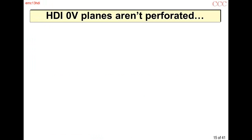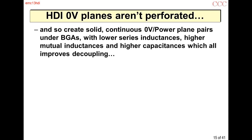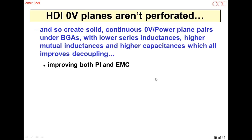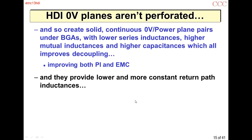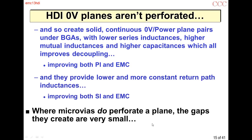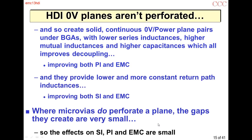With microviar planes, they aren't necessarily perforated. With through-hole plate, any time you change a layer you get a through-hole going all the way through the board — through all the layers including the planes — whether you want to or not. But with HDI, we can create solid ground and power plane pairs under ball grid arrays, which have lower series inductances because they're more solid, higher mutual inductances and higher capacitance, improving decoupling, power integrity, and EMC. Where microvias do perforate a plane, the gaps are very small because the holes are very small, so the effects are much smaller than with through-hole plate.